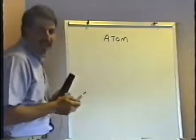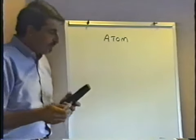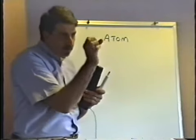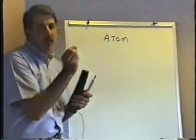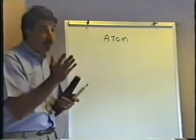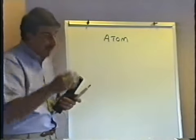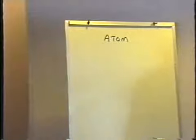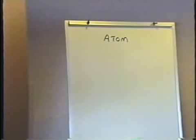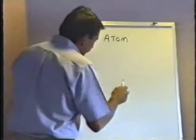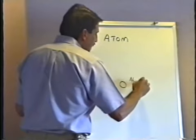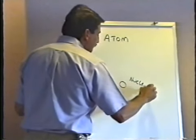Let's start off by taking a look at the atom. The atom is the smallest bit of any element. If you start cutting an element down smaller and smaller, the smallest thing you end up with that still retains the property of that element is the atom. In the center of the atom, there's something called the nucleus — N-U-C-L-E-U-S — the nucleus.